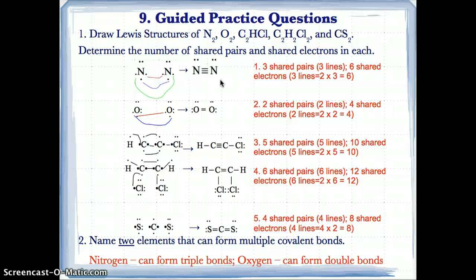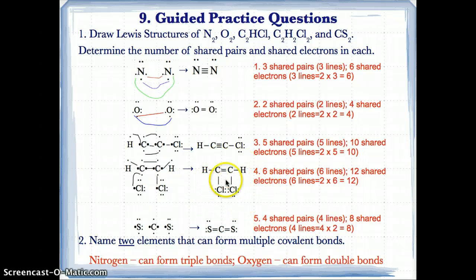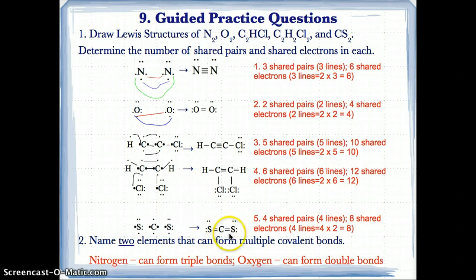For C2HCl, there are five shared pairs and ten shared electrons from five lines. For C2H2Cl2, there are six shared pairs and twelve shared electrons from six lines. For CS2, there are four shared pairs and eight shared electrons from four lines — since one line equals two shared electrons, four lines equals eight shared electrons.